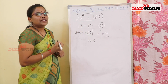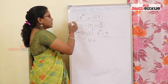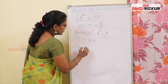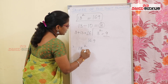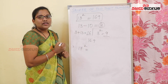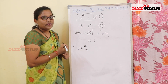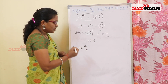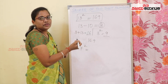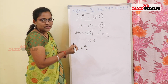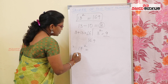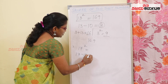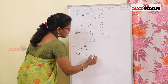Let's try another example: 17 squared using this method. 17's nearest base is 10. So 17 minus 10, the result is 7.